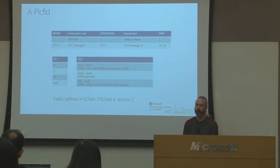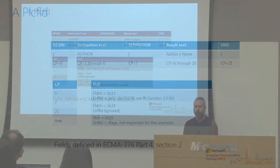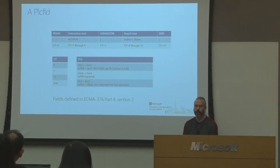Here's an example of a PLC FLD structure. We have the CPs mapped to field character data. CP0 corresponds to the begin character — the data section identifies this as an author field. CP7 identifies a separator character, and CP21 is identified as an end character.